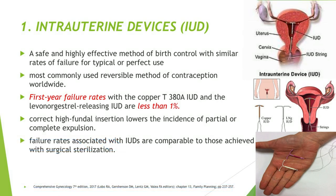The intrauterine device, or IUD, is a safe and highly effective method of birth control with similar failure rates for typical or perfect use. It is the most commonly used reversible method of contraception worldwide. First-year failure rates with the copper T380A IUD and the levonorgestrel-releasing IUD are less than 1%. Correct high fundal insertion lowers the incidence of partial or complete expulsion, and failure rates with IUDs are comparable to those achieved with surgical sterilization.